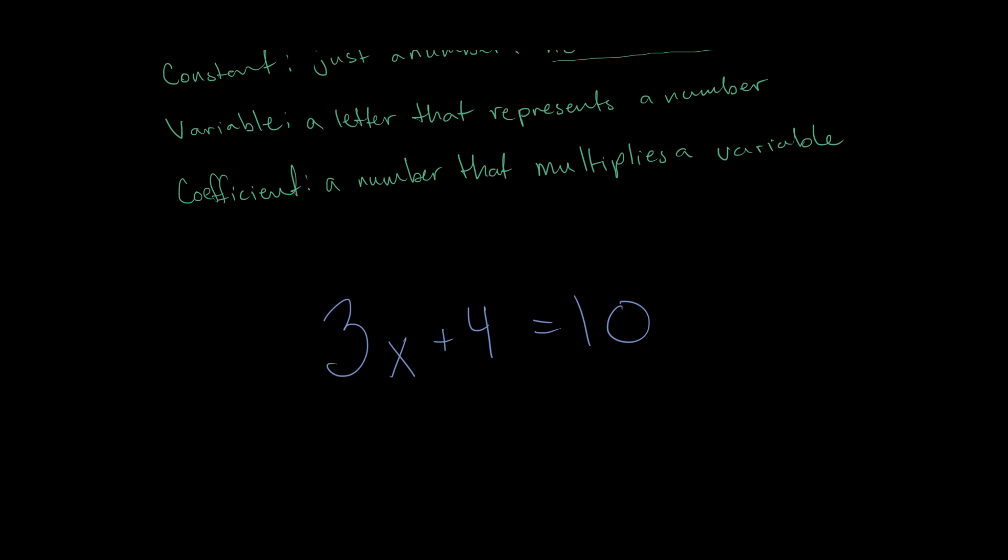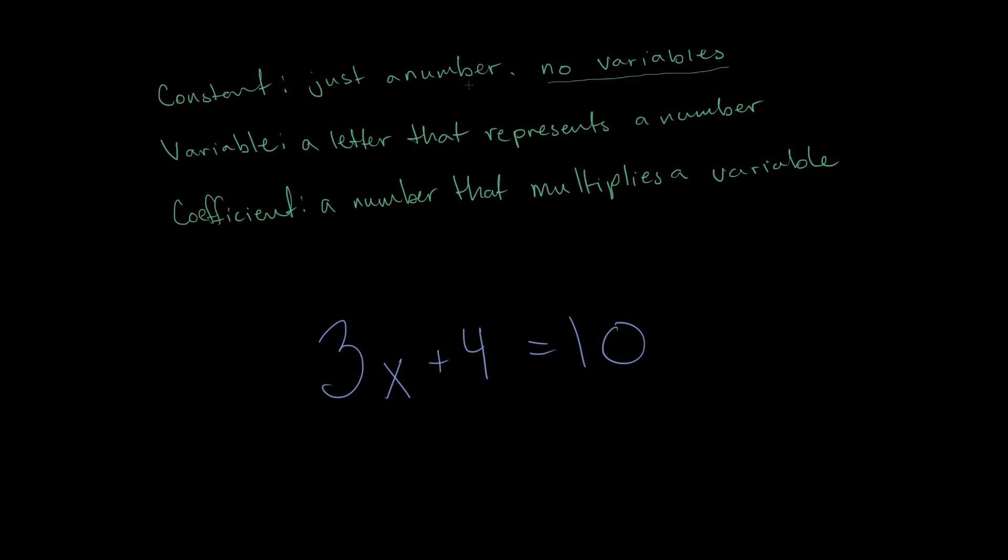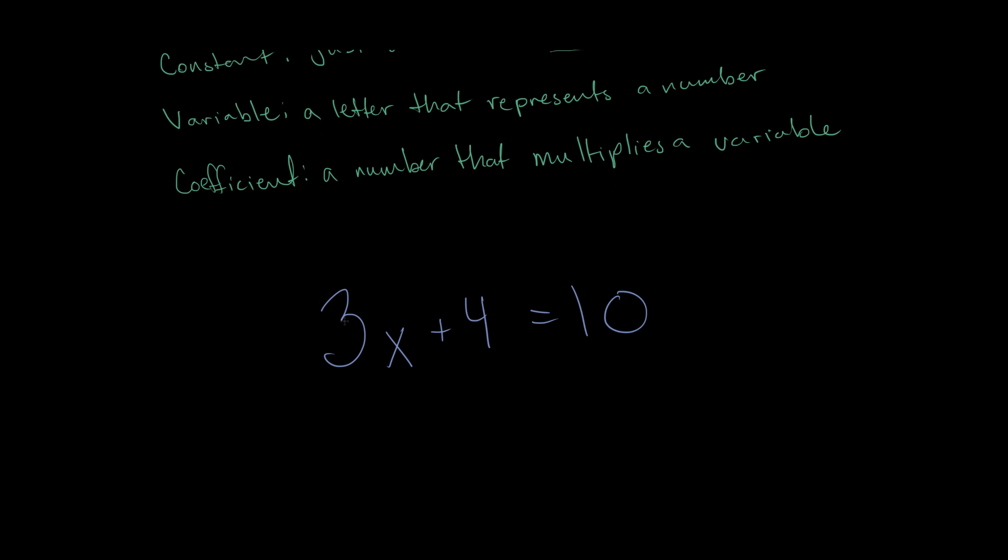First, let's find all of the constants. Just to review, a constant is just a number and it has no variables attached to it. Well, here's a number, but unfortunately it has a variable, x, attached to it. So that's not a constant. We have a 4 here, and there's no variable attached to it. So that's a constant. And we have a 10 here with no variable attached to it. So that's also a constant.